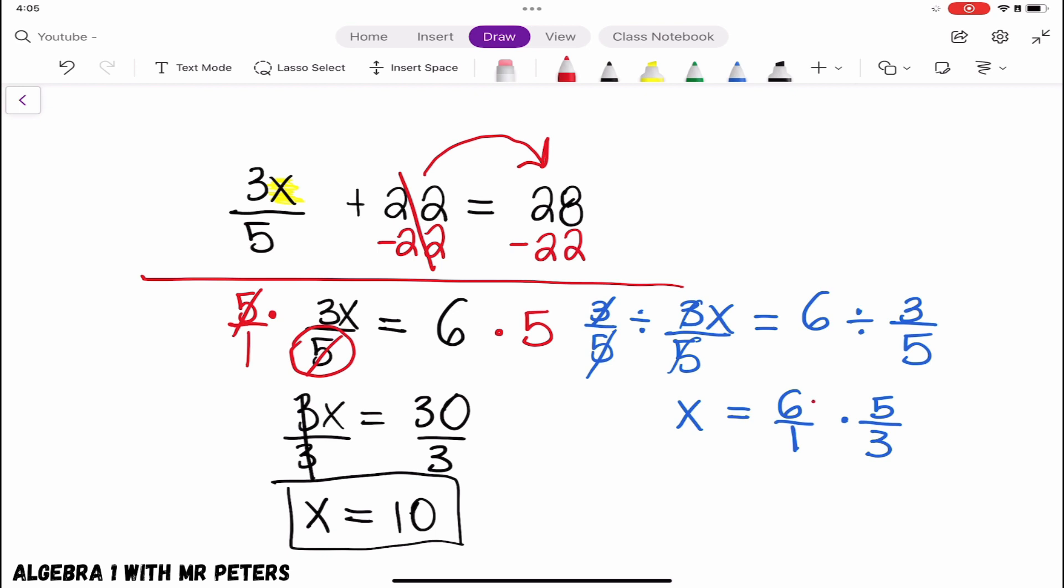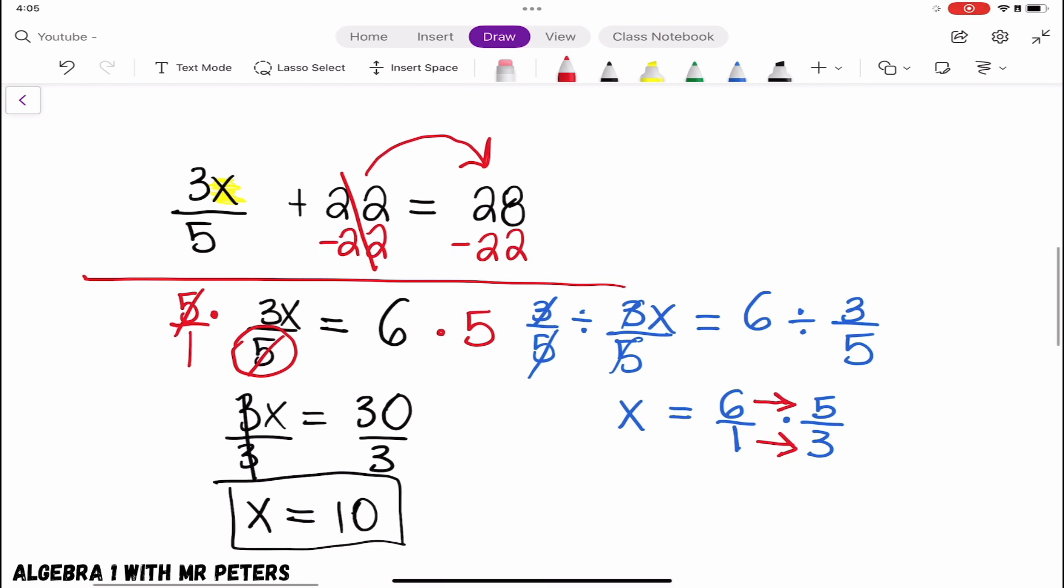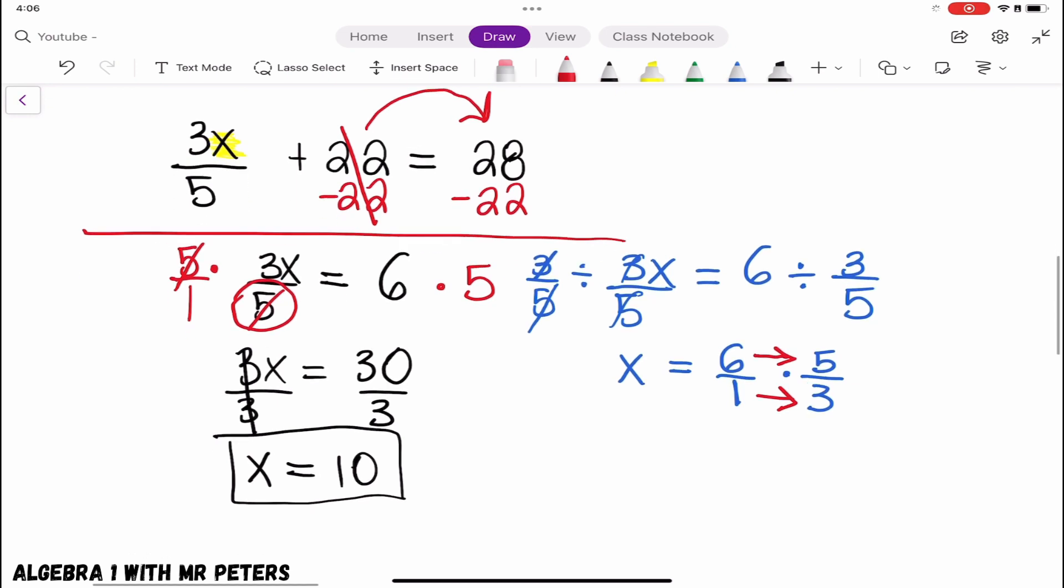So what this means is 3 over 5 is now going to turn into 5 over 3. And to solve, we're going to multiply straight across, meaning 6 times 5 and 1 times 3. And once we do this, we notice that we're going to get about the same answer. x is equal to 30 over 3. And once we simplify, that answer is just 10 like we had previously.